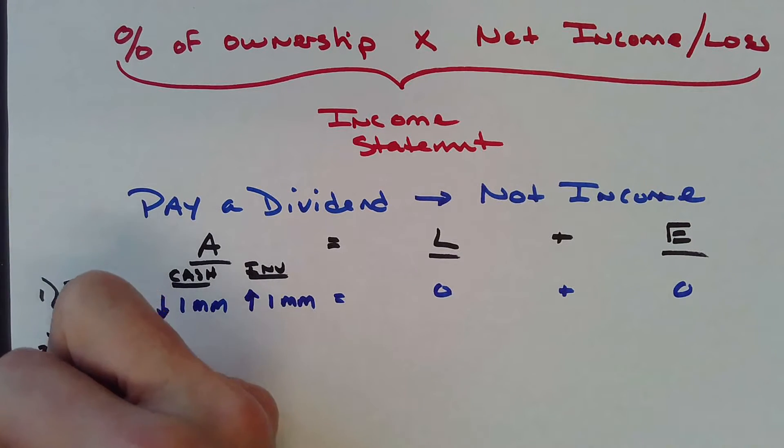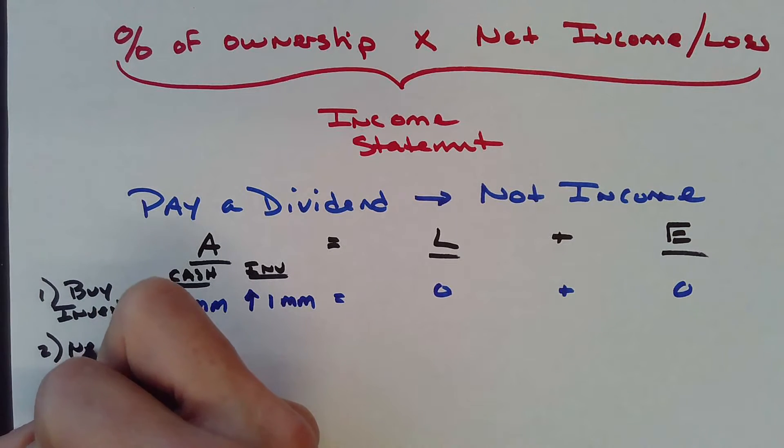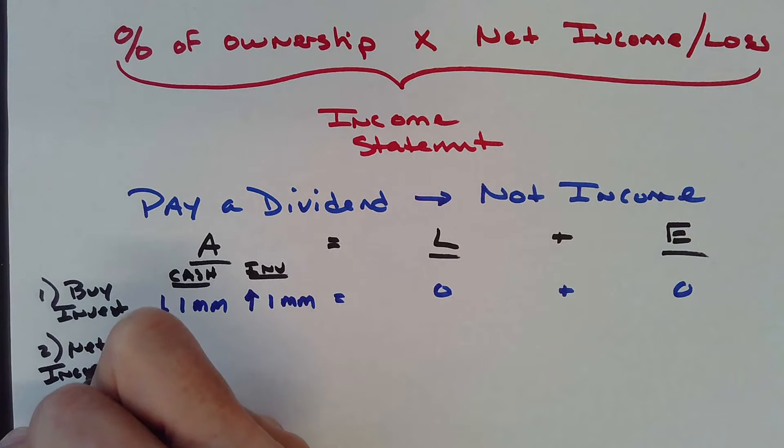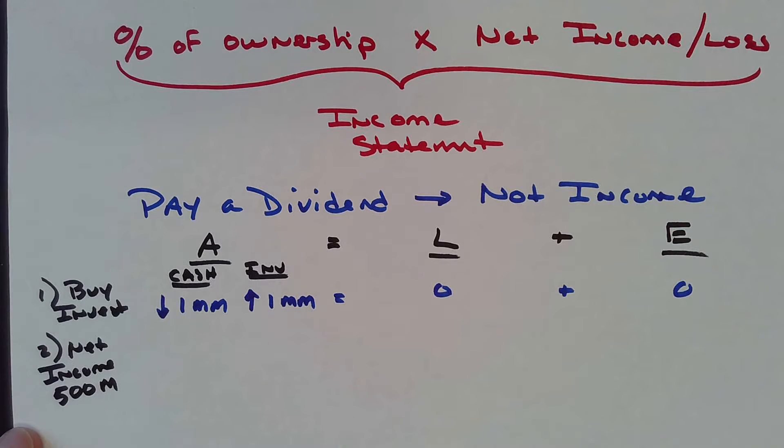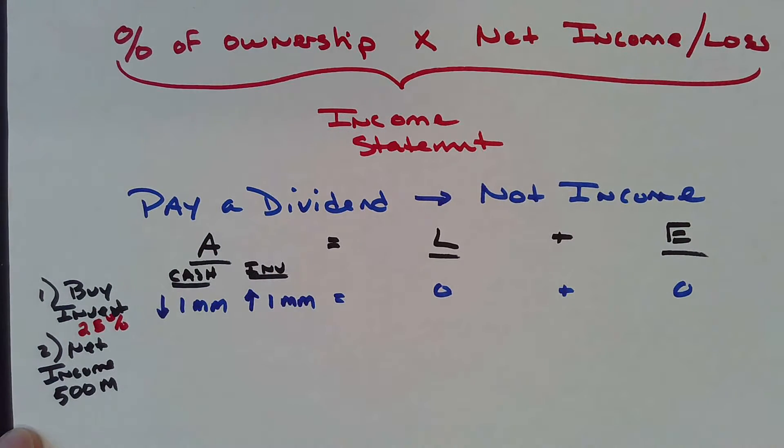During the year, they had net income of $500,000. This million dollar investment gave me a 25% stake, so of this net income I'm entitled to 25%, which is $125,000.